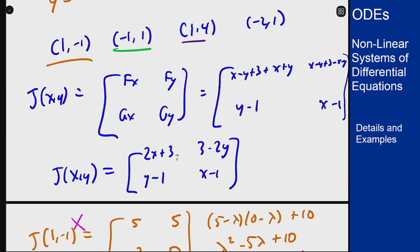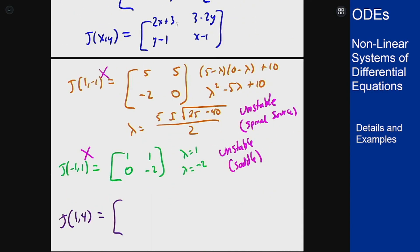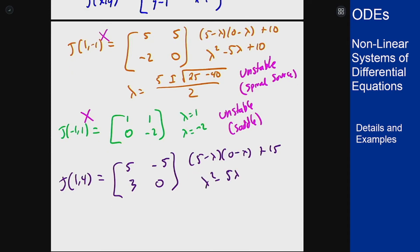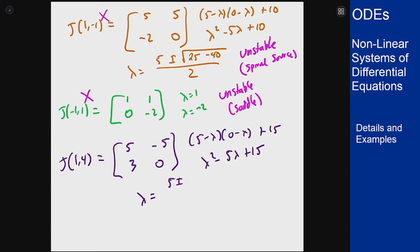Our next point is 1 comma 4. For this, I get 2 plus 3 is 5, 3 minus 8 is minus 5, 4 minus 1 is 3, 1 minus 1 is 0. Back to our normal approach again. 5 minus lambda, 0 minus lambda, plus 15. Lambda squared minus 5 lambda plus 15. Again, there's no factoring. The quadratic formula: lambda is 5 plus or minus square root of 25 minus 60 over 2. Again, complex with positive real part, so unstable because that's a spiral source. So it's not this one either.